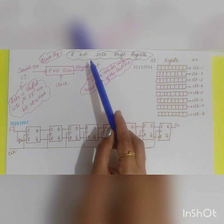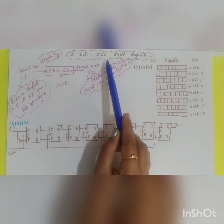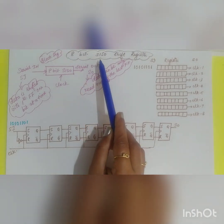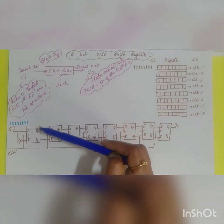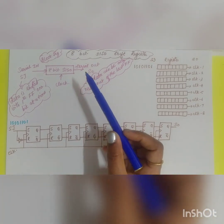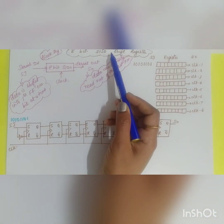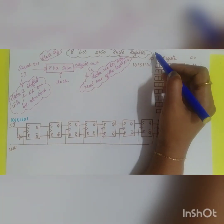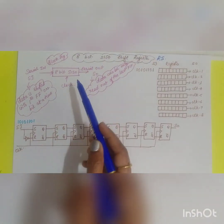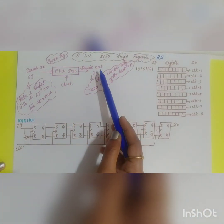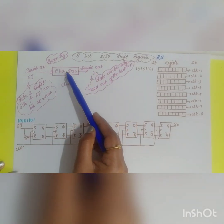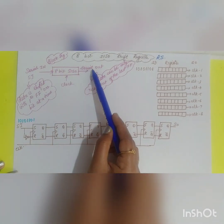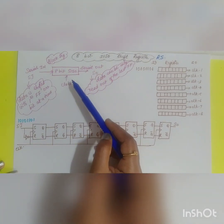In a serial in serial out shift register, if it is an n-bit shift register you need n flip-flops. So if it is an 8-bit shift register, then you require 8 flip-flops. The first diagram shows the block diagram of the 8-bit serial in serial out shift register, which consists of a serial input, a serial output, and a clock signal.